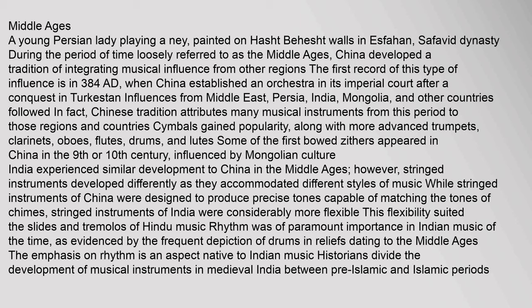During the period of time loosely referred to as the Middle Ages, China developed a tradition of integrating musical influence from other regions. The first record of this type of influence is in 384 AD, when China established an orchestra in its imperial court after a conquest in Turkestan. Influences from the Middle East, Persia, India, Mongolia, and other countries followed. Symbols gained popularity, along with more advanced trumpets, clarinets, oboes, flutes, drums, and lutes. Some of the first bowed zithers appeared in China in the 9th or 10th century, influenced by Mongolian culture.